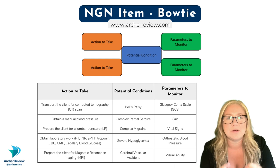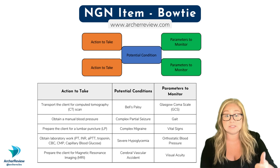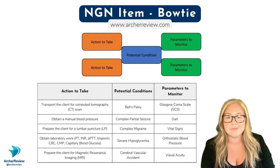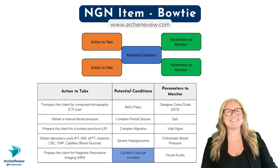It's got to come from that middle column — potential condition. So what do you think it is? Is it Bell's palsy, a complex partial seizure, a complex migraine, severe hypoglycemia, or a cerebral vascular accident? I know you guys got this — it's a CVA, or a stroke.